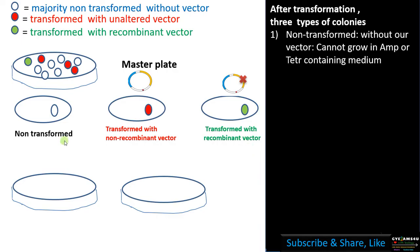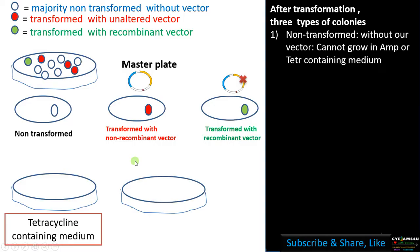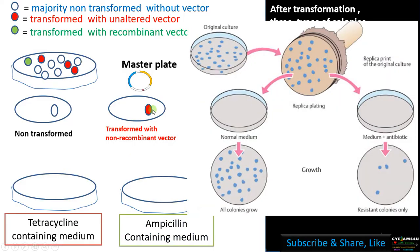We transfer these colonies into tetracycline containing medium and ampicillin containing medium using the method of replica plating. Using a velvet, we take the imprint of these colonies and transfer it onto the required medium, so that the spatial organization or position of the colonies remains the same as that of the master plate.